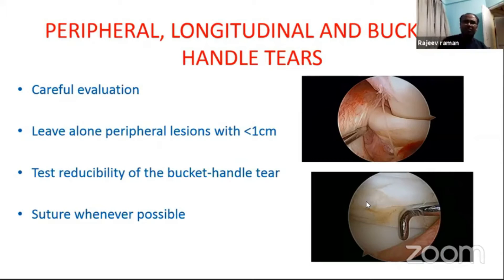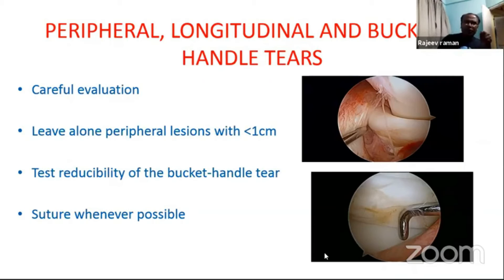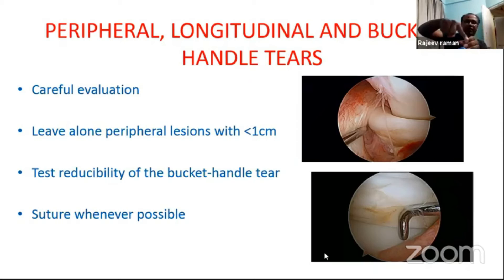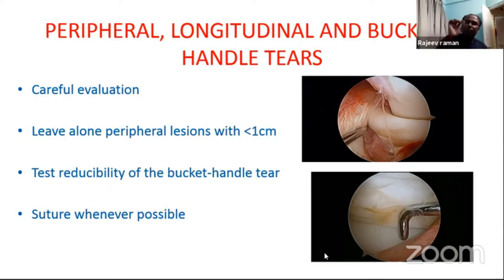In irreparable cases, try to remove the irreparable part of the tear, but again, try to preserve the meniscus rim. First, check for reducibility — whether you can reduce the meniscus or not. Here you can see the classical bucket handle tear — try to reduce it with your probe. Once you can reduce the meniscus, only then try for repairing. Always start your repair from the posterior part — posterior horn, then body, then anterior horn — using outside-in, inside-out, or all-inside technique. Take-home message: young patient, acute tear — preserve it, repair these meniscus. If it is irreparable, remove the tear but try to preserve the meniscus rim. Always, always try to save the bucket handle tear.